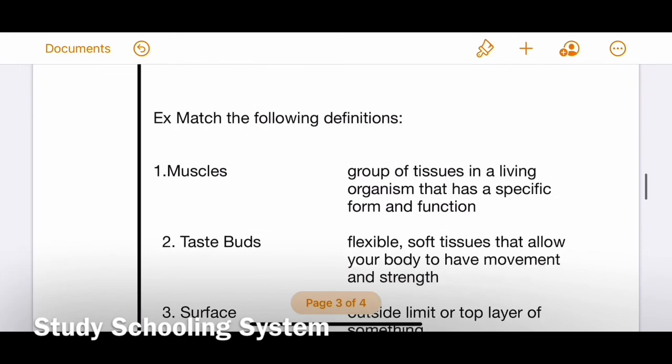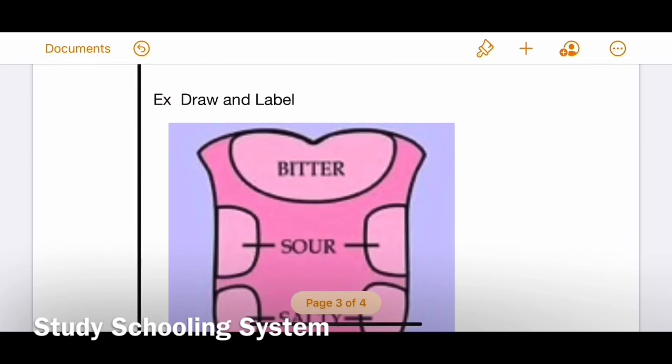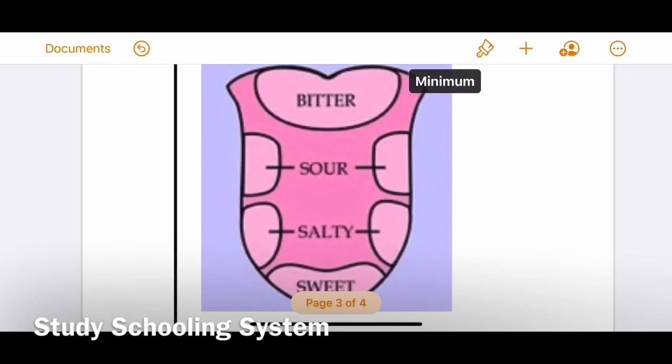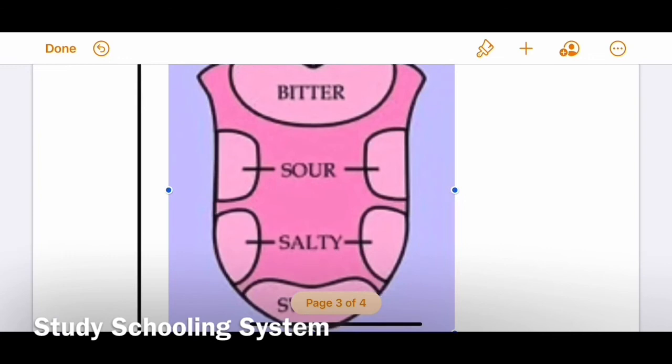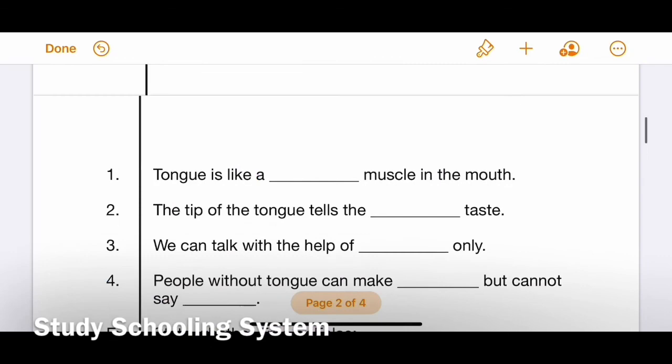Now let's move on to the last exercise, which is draw and label. You will draw a picture of a tongue and label its taste buds. You will draw a simple tongue and label all the taste buds: bitter, sour, salty, and sweet. Students, make sure to do all of these tasks, all of these exercises. See you in next class students.